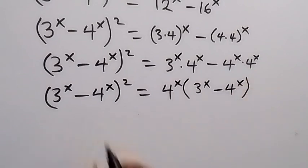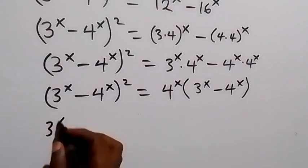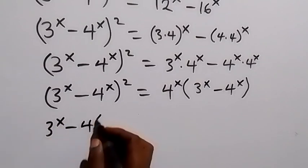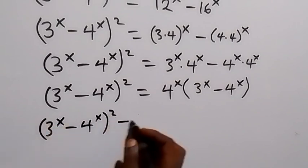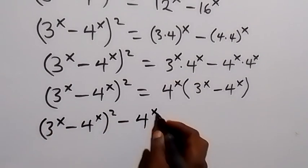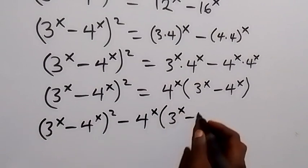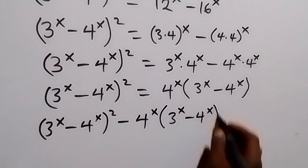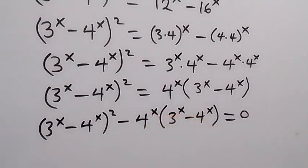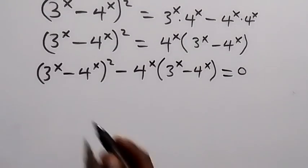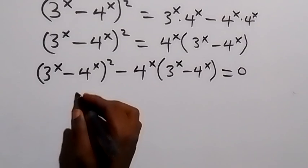Let's take everything to one side. This becomes (3^x minus 4^x) squared minus 4^x times (3^x minus 4^x) equals 0. Now, (3^x minus 4^x) is a common factor — let's call it u.